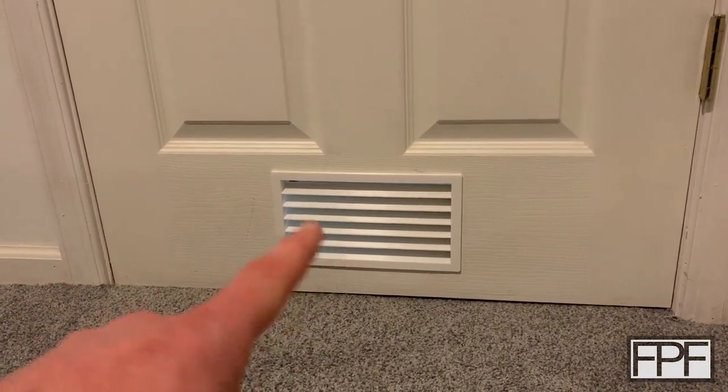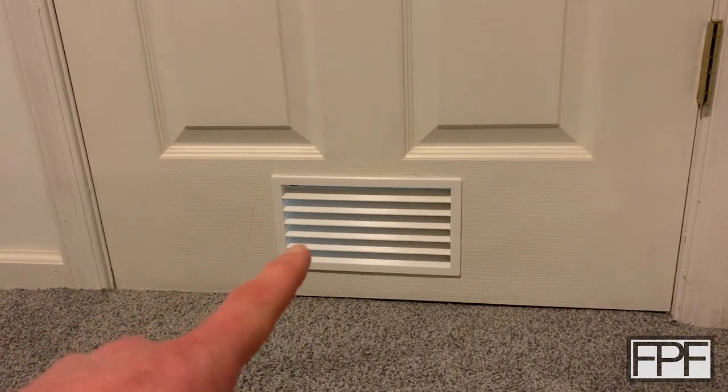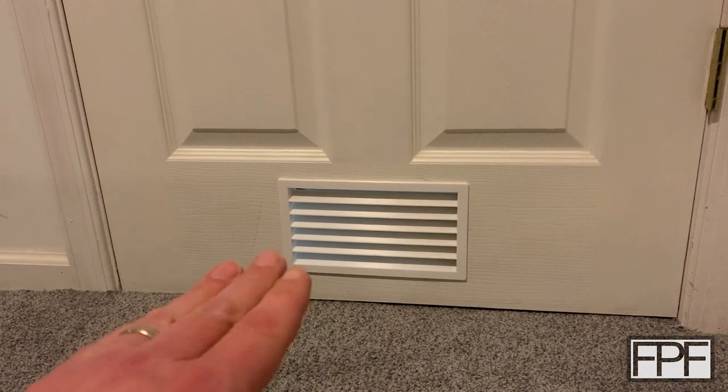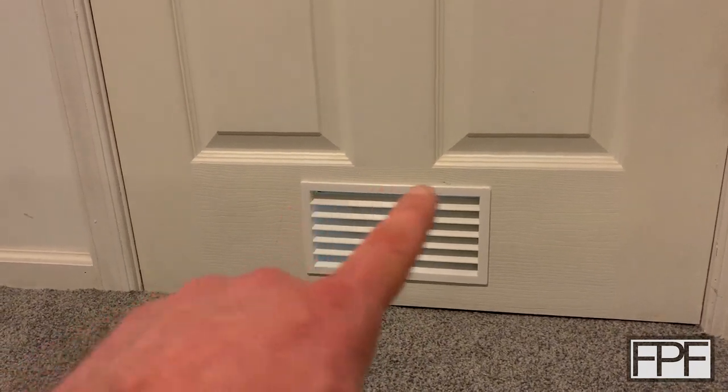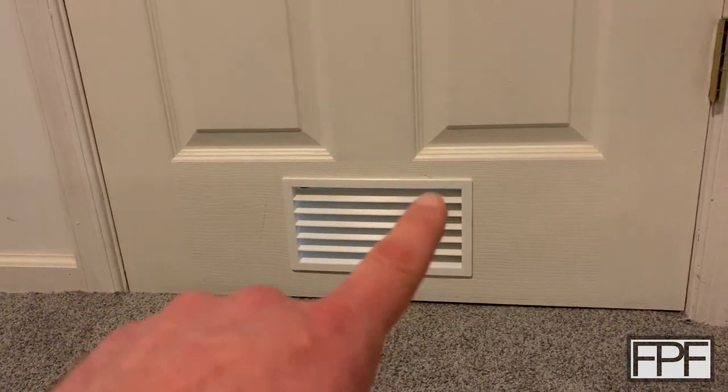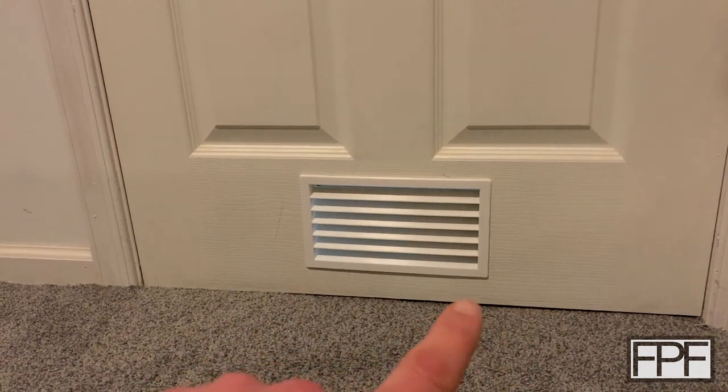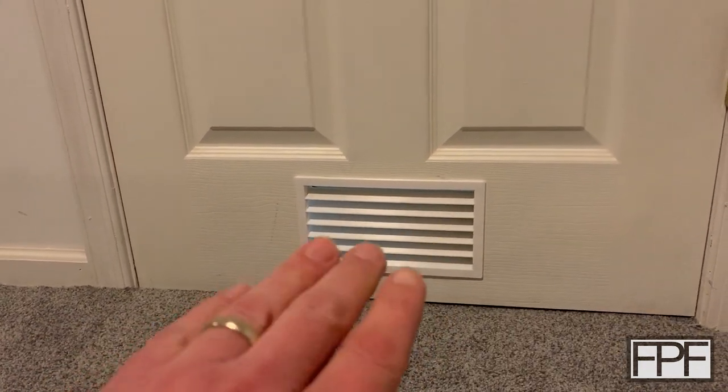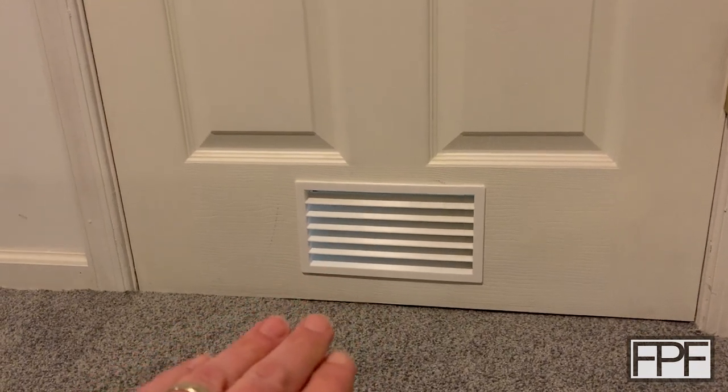To cut the hole in the door, what I did is I 3D printed a template first of the size of the piece that was going to go through the door, put that up on the door, marked it out. I drilled each of the four corners, and then I just used a scroll saw to go in and cut the opening in the door.